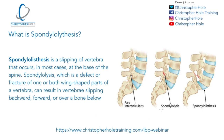There are two related conditions: spondylolysis and spondylolisthesis. Spondylolysis is a defect or fracture of one or both of the wing-shaped parts of the vertebrae — a fracture of the processes of the spine, as you can see on this diagram. What can then happen is that the vertebrae slips forward on top of the disc, creating spondylolisthesis.